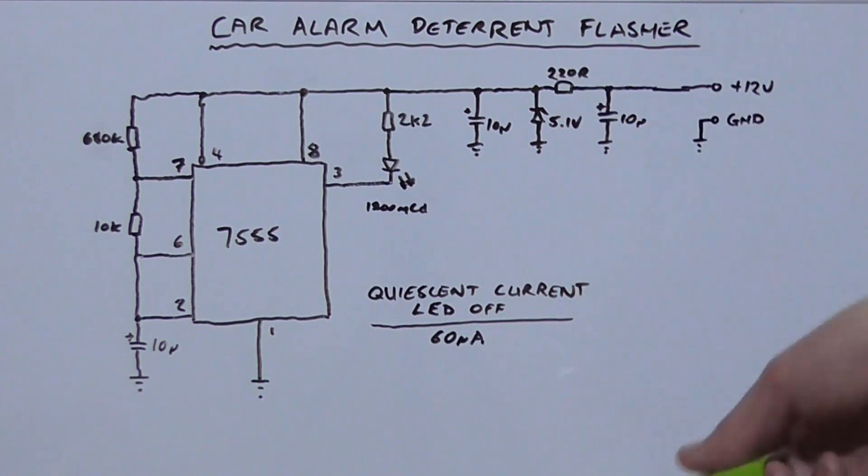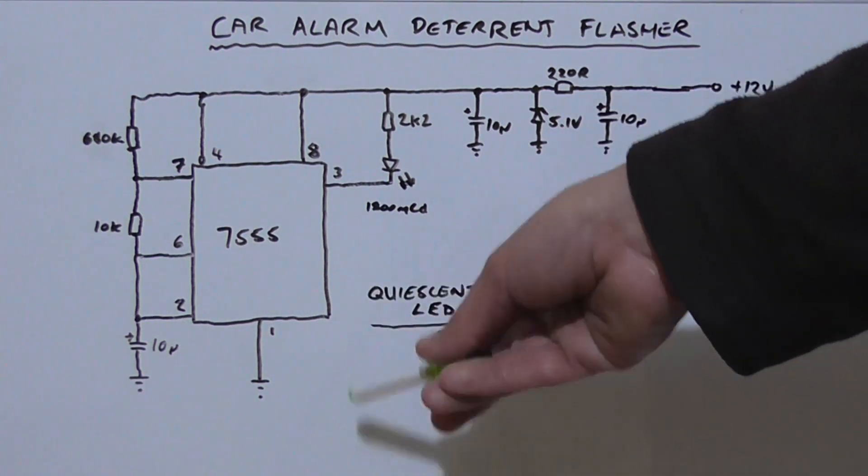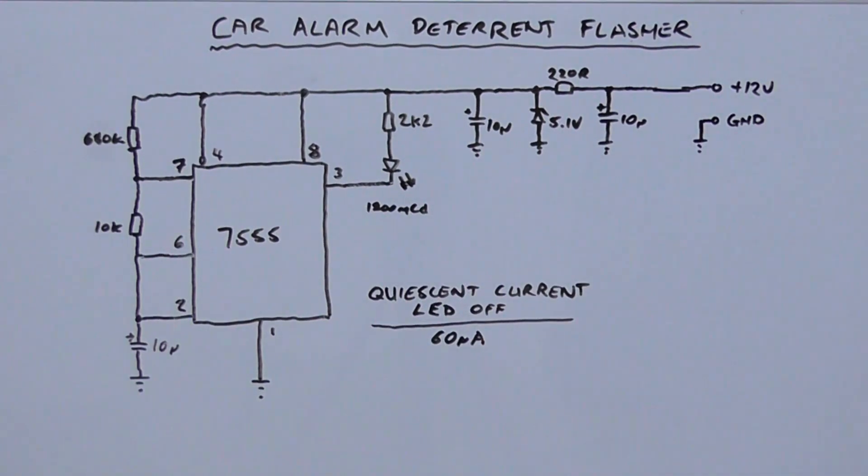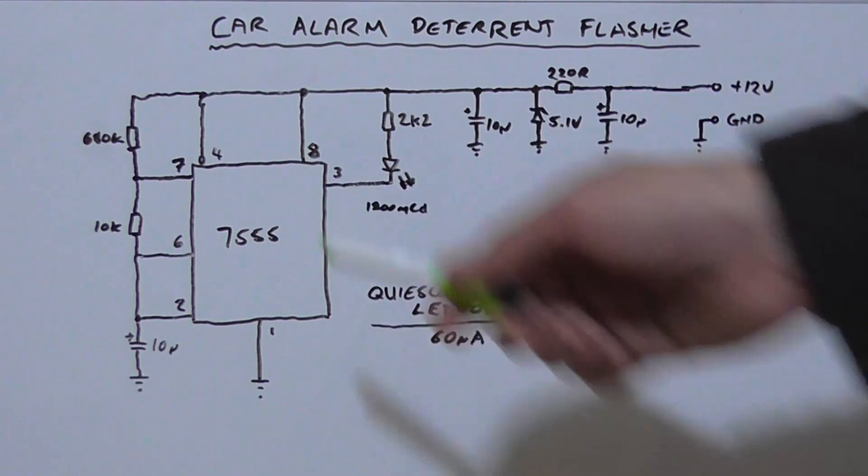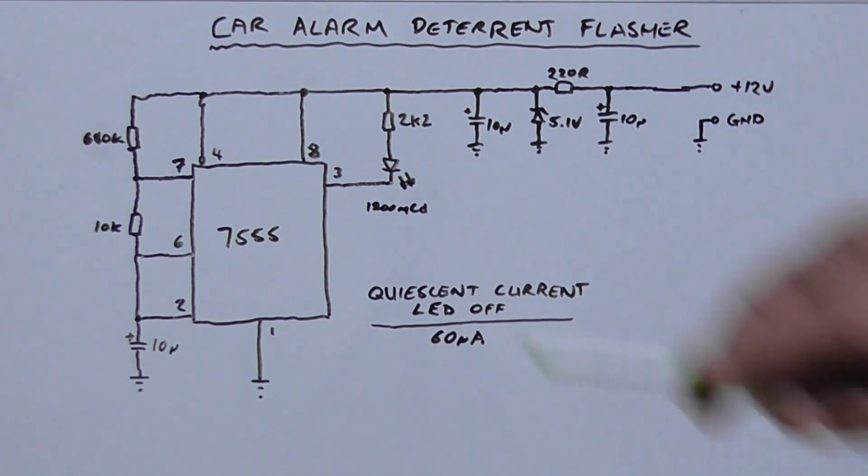And the second reason is because with pin 5, we don't actually have to tie it to ground via a 10 nanofarad capacitor as you would the 555 counterpart, and that's according to the datasheet. However, I've tested it both with a 755 and a 555, and the capacitor is not needed in either implementation, so it doesn't matter. Anyhow, moving on.